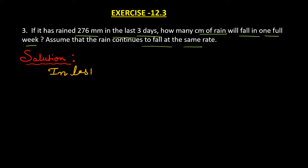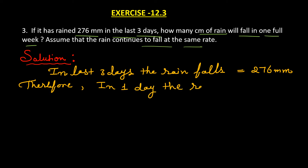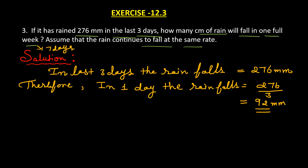In last three days, the rain falls is equal to 276 mm. Therefore, in one day the rain falls is equal to 276 divided by 3, which is equal to 92 mm. So one day mein kitna rainfall ho raha hai — 92 mm. Now hume one full week, means seven days mein kitna rainfall hoga, usse find out karna hai.